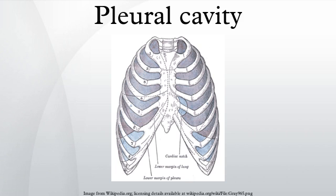In human anatomy, the pleural cavity is the potential space between the two pleura of the lungs. A pleura is a serous membrane which folds back onto itself to form a two-layered membrane structure. The thin space between the two pleural layers is known as the pleural cavity and normally contains a small amount of pleural fluid.